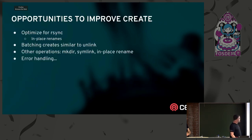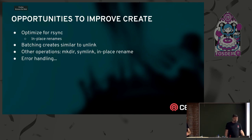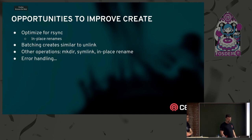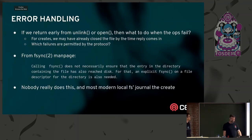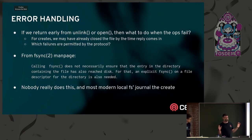Further opportunities to improve this: we could allow for in-place renames, making an asynchronous rename. We could also batch creates — if we buffer them for a little while, we don't necessarily have to fire them off immediately. We could also do other operations like symlinks. And of course, error handling, which is the bugaboo for this whole thing.